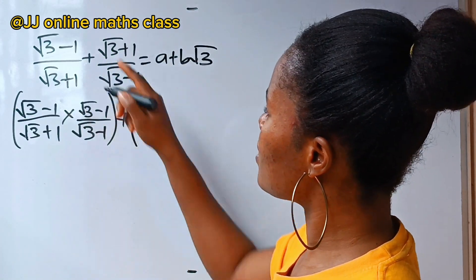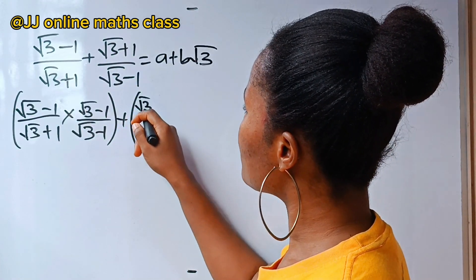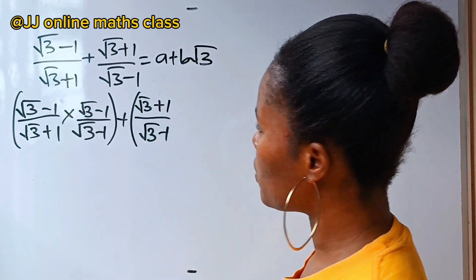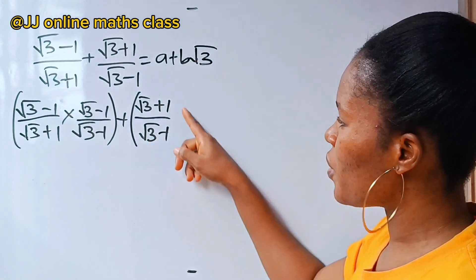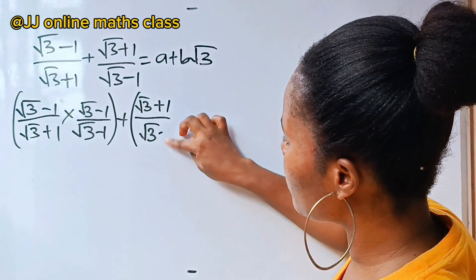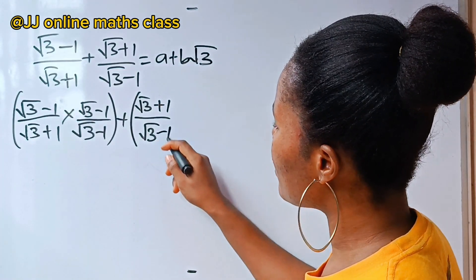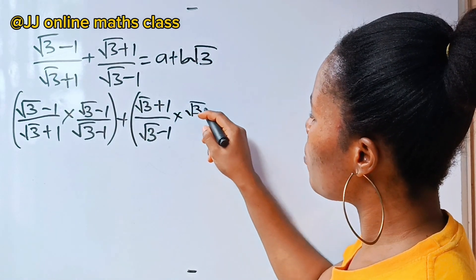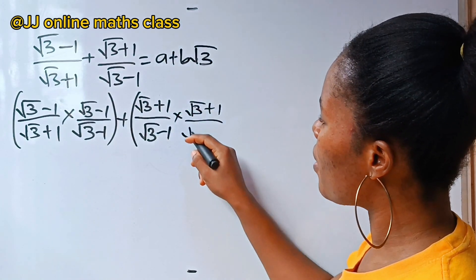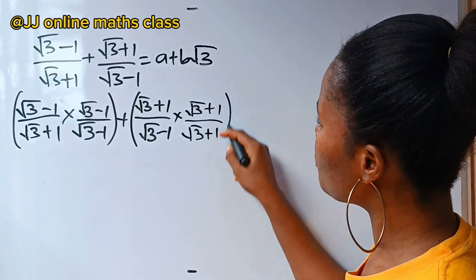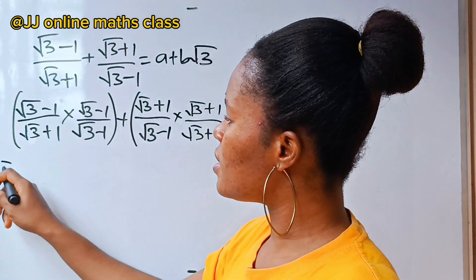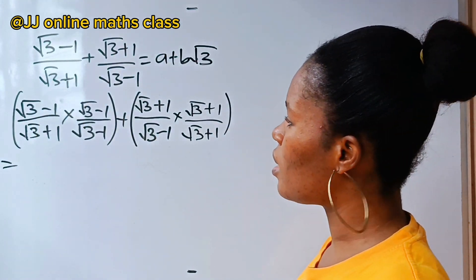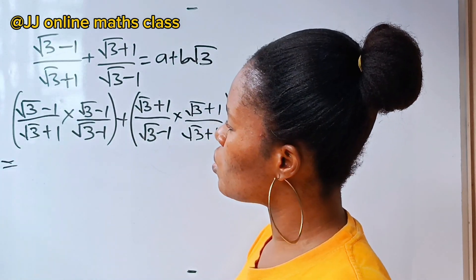Plus, the second part is root 3 plus 1 over root 3 minus 1. We are also going to rationalize the denominator of this one by multiplying it by the conjugate of the denominator, which is root 3 plus 1 divided by root 3 plus 1.